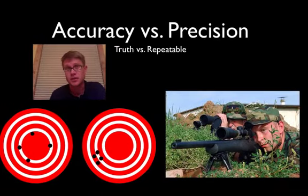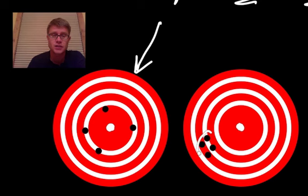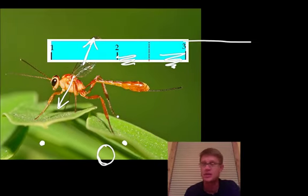We've got some snipers here, and what snipers try to be is both accurate and precise. Accuracy refers to truth — how close you are to the accepted answer. Precision refers to repeatability. Looking at these bullseyes: one sniper's shots are close to the center, so that's accurate but not precise. Another has shots way off to the side — not accurate, but very precise with a tight grouping. As a scientist, we hope to be both accurate and precise.